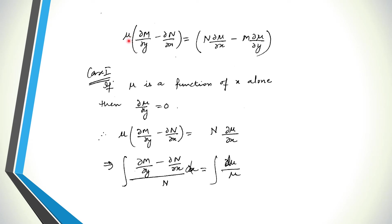When you take mu common from the relevant terms, you arrive at the combined equation relating the partial derivatives of mu to M and N.